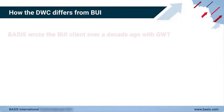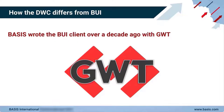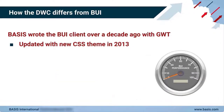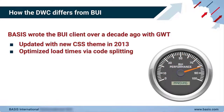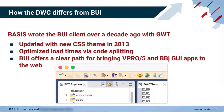Basis designed and wrote the BUI client over a decade ago using the Google Web Toolkit. Through the years, we've continued to make improvements to the client, including designing a completely new default CSS theme in 2013. We recently optimized some of the underlying communications between the client and the server via code splitting to decrease the initial application load time. Even though BUI isn't the latest client, it continues to provide a straightforward path for publishing vPro5 and BBJ GUI apps to the web.